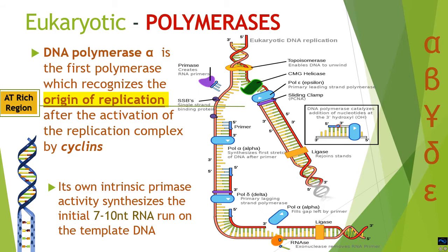There is a difference between the leading and lagging strand in terms of pol alpha activity. In the leading strand the primer is synthesized only once because the leading strand is then continuously replicated. In the lagging strand, the primer must be synthesized every time an Okazaki fragment is synthesized. DNA polymerase alpha in eukaryotes will bind continuously after every thousand to ten thousand base pairs so as to synthesize primers again and again for the discontinuous synthesis of the lagging strand.